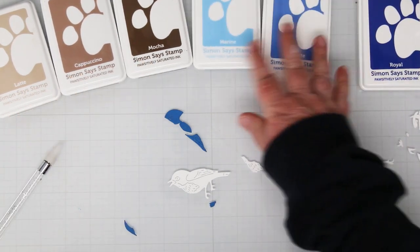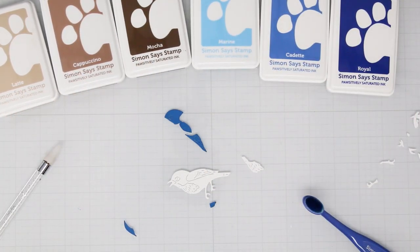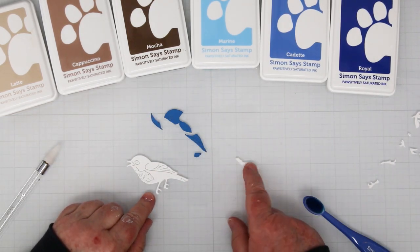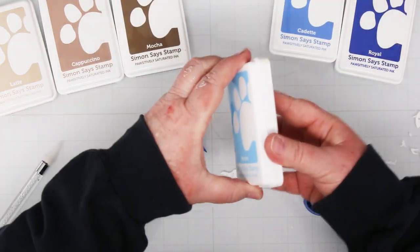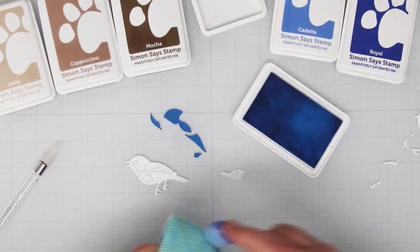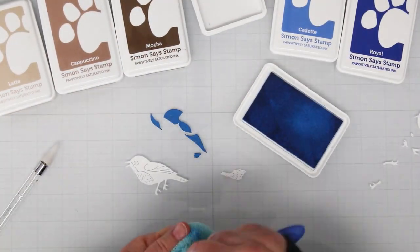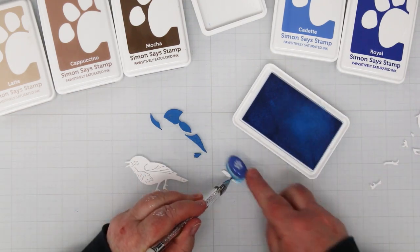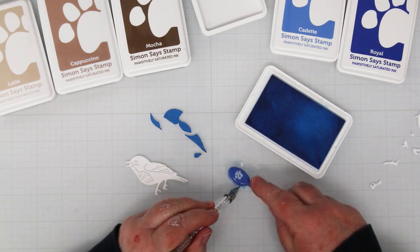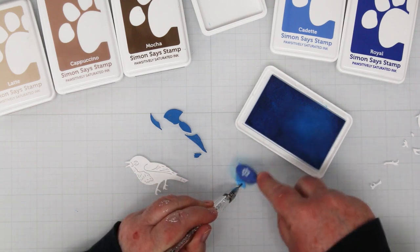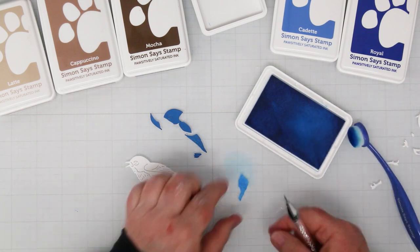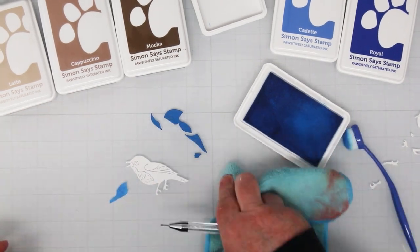We're going to settle in and use some of these Simon Says Stamp inks and color up the little birdie. I'm going to start with the little one, and as I said the overlying pieces are blue. I cut the chest piece out of white so that I could ink blend it for a softer blue. I am adding that with a small ink blending tool and using my embellishment wand to hold it down.